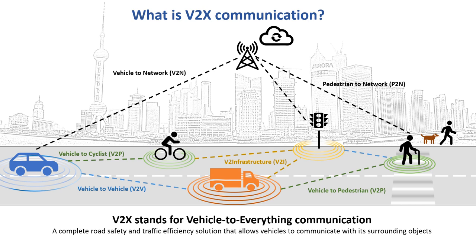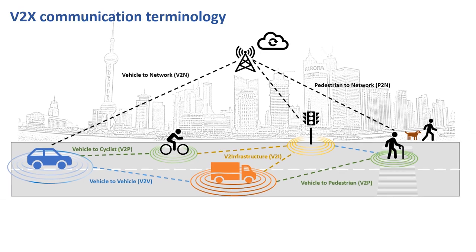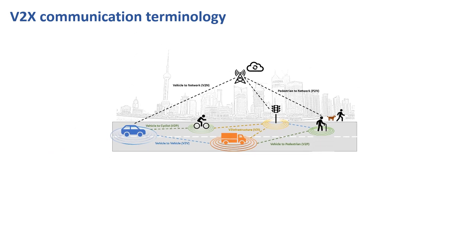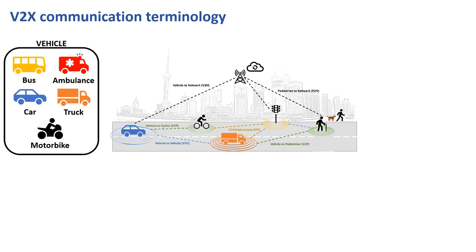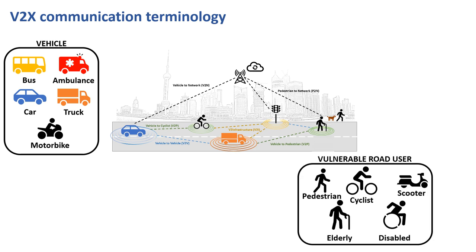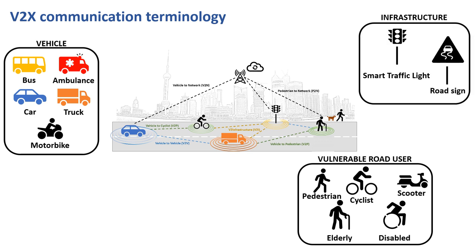When vehicles communicate with other vehicles, infrastructure, pedestrians, or the mobile network, we call it Vehicle-to-Everything or V2X communication. V2X is a complete road safety and traffic efficiency solution. Before discussing technical details, it is important to know the common terminologies. 'Vehicle' means any motorized vehicle including cars, buses, trucks, ambulances, and motorbikes. 'Pedestrian' refers to vulnerable road users including cyclists, scooter riders, elderly, and disabled persons. 'Infrastructure' means smart traffic lights, road signs, and V2X roadside units.